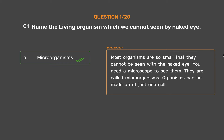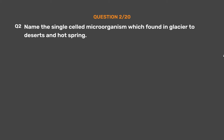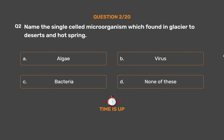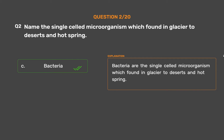Question number 2. Name the single-celled microorganism found in glaciers, deserts, and hot springs. Option A: Algae. Option B: Virus. Option C: Bacteria. Option D: None of these. The correct answer is Option C, Bacteria. Bacteria are the single-celled microorganism found in glaciers, deserts, and hot springs.